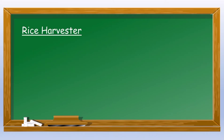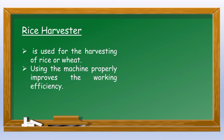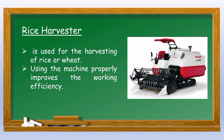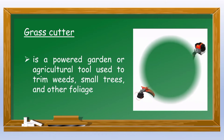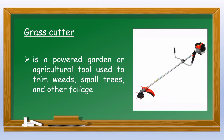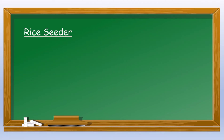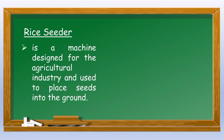The Rice Harvester is used for the harvesting of rice or wheat; using the machine properly improves working efficiency. The Grass Cutter is a powered garden or agricultural tool used to trim weeds, small trees, and other foliage. The Rice Seeder is a machine designed for the agricultural industry and used to place seeds into the ground.